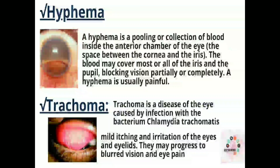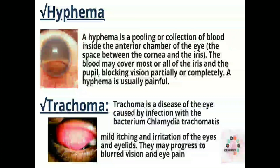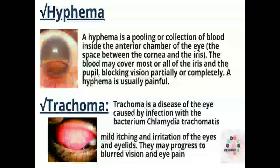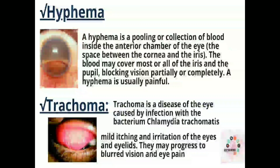Next we have hyphema. As you can see in the picture, it is a pooling or collection of blood inside the anterior chamber of the eye — the space between the cornea and the iris. The blood may cover most or all of the iris and the pupil, blocking vision partially or completely. A hyphema is usually painful.